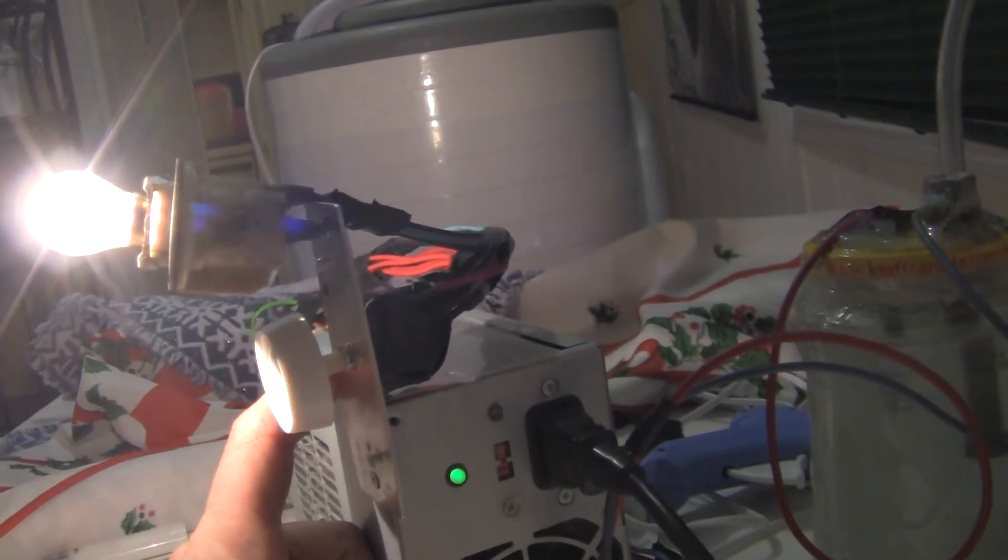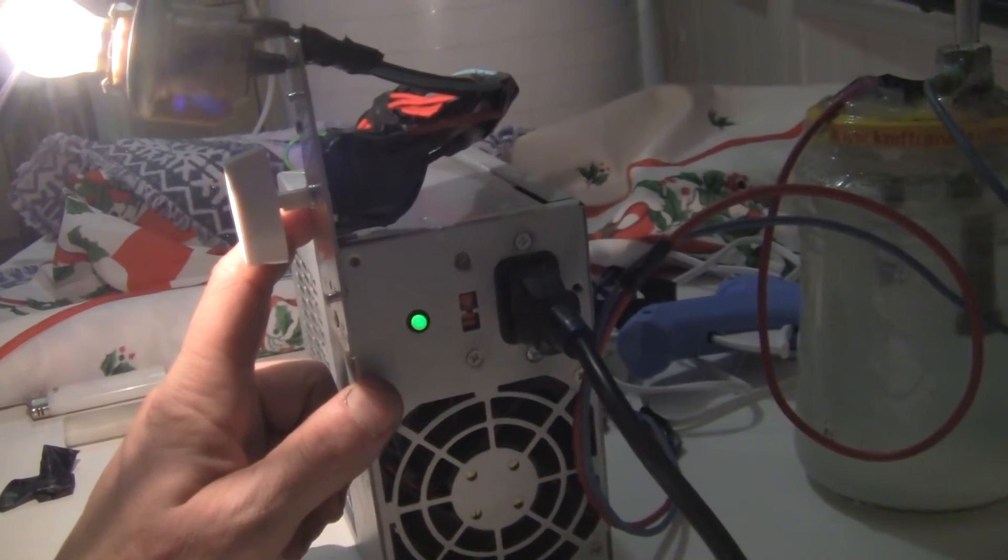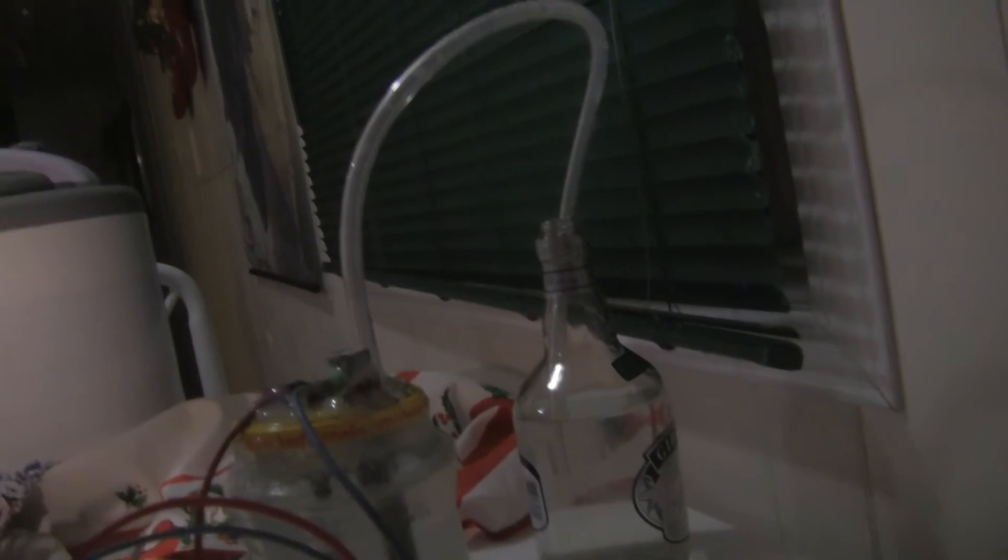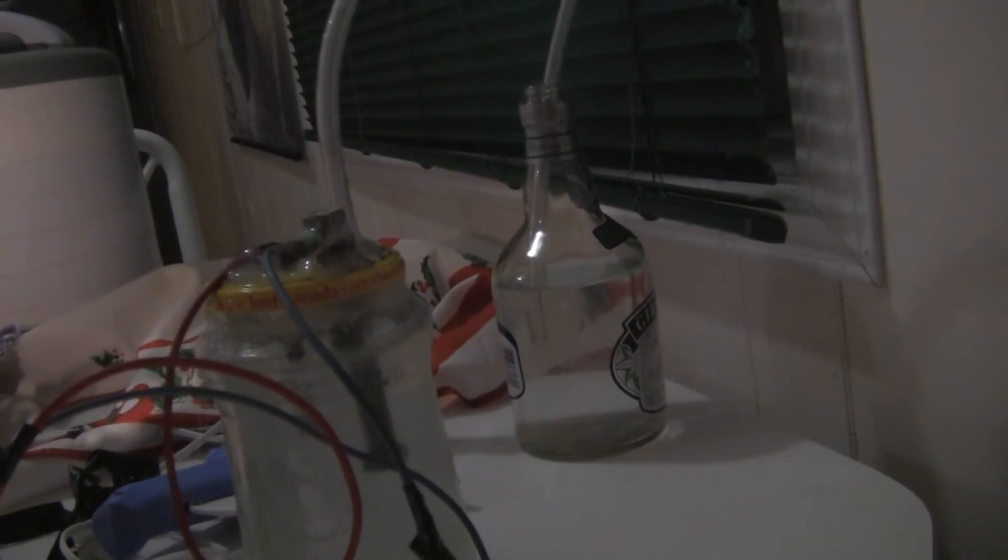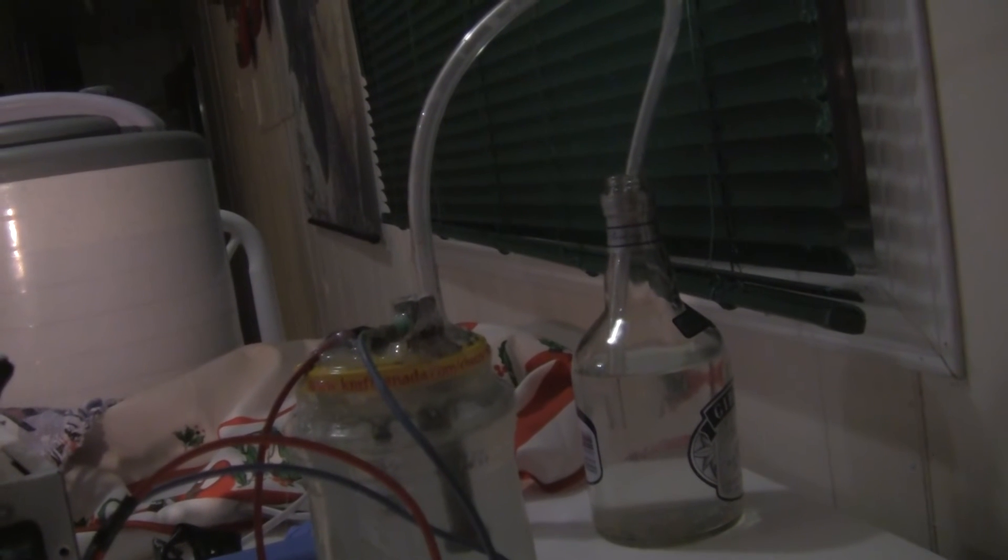So yeah, curious about the scrubber. Just sodium something or other mixture, lye, caustic soda, another name for it. And essentially running chlorine through it, as this is doing, to scrub the chlorine out of it so we don't get chlorine gas into my house.